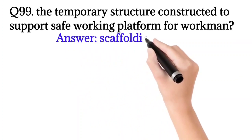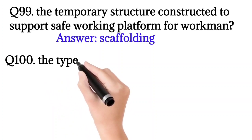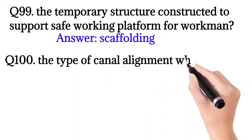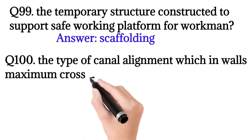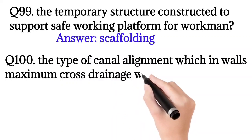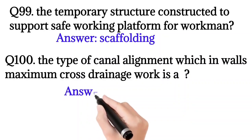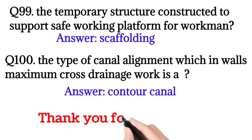Question number 99: The temporary structure constructed to support a safe working platform for workmen. Right answer: scaffolding. Question number 100: The type of canal alignment which requires maximum cross drainage works. Answer: contour canal. Thank you for watching.